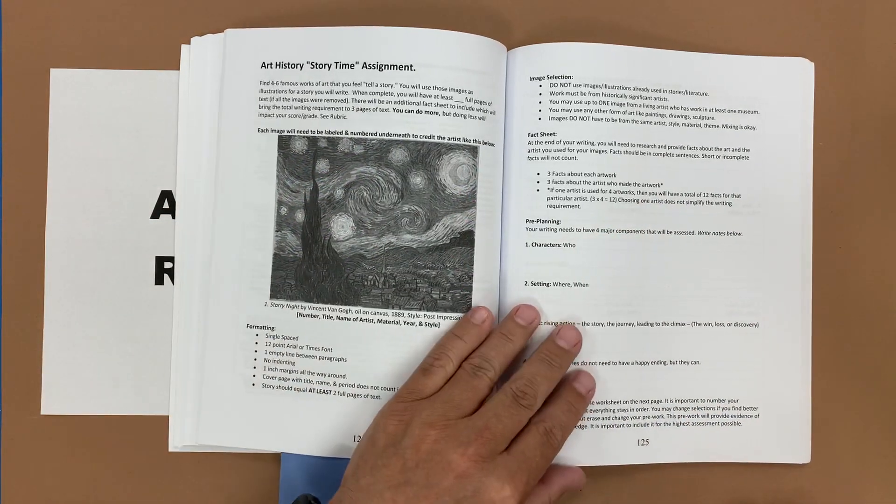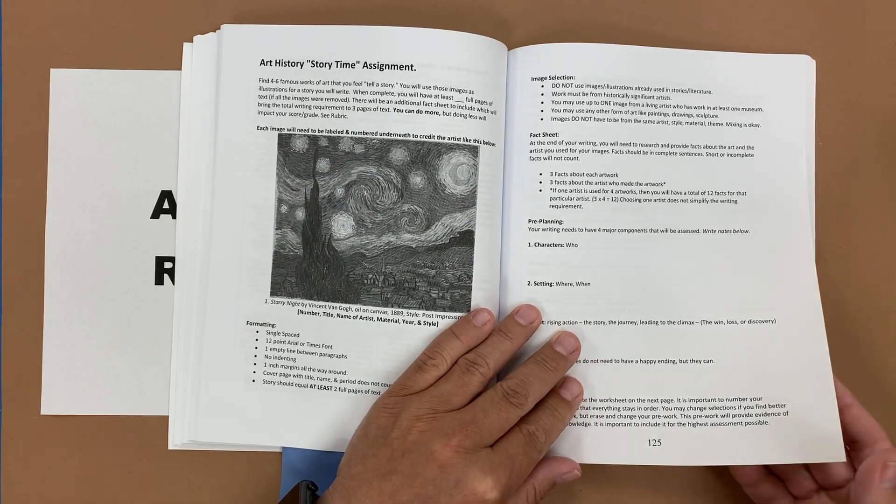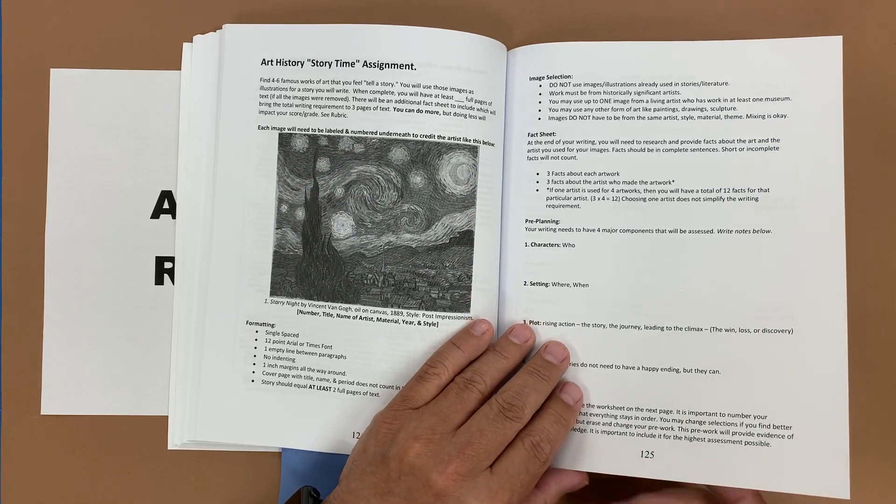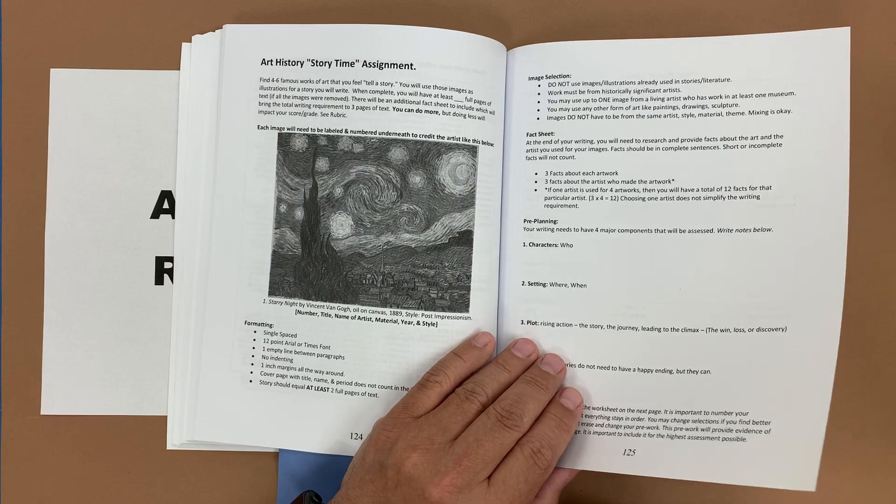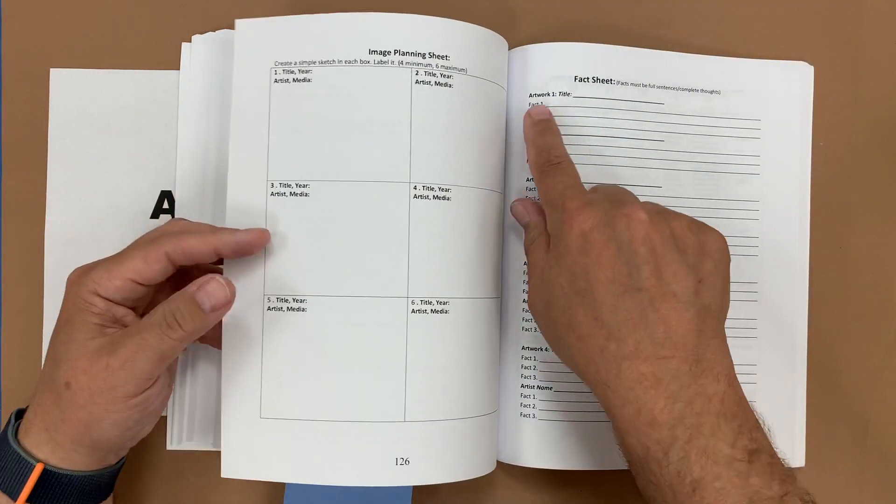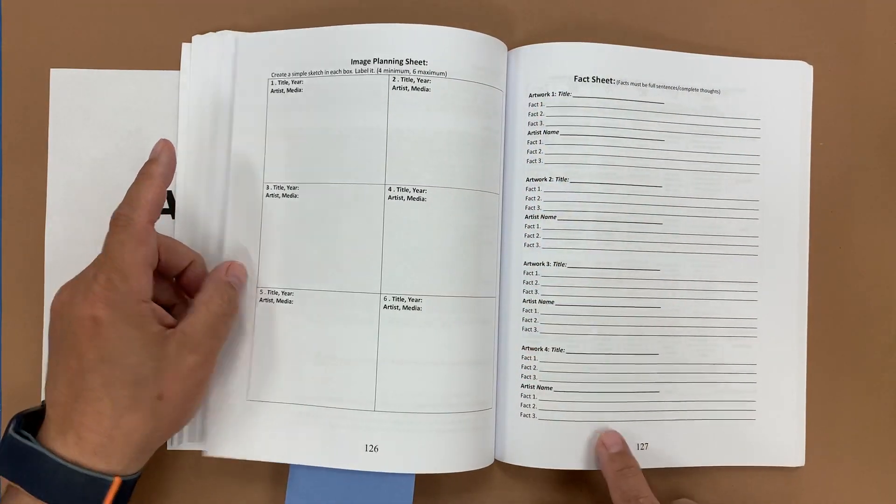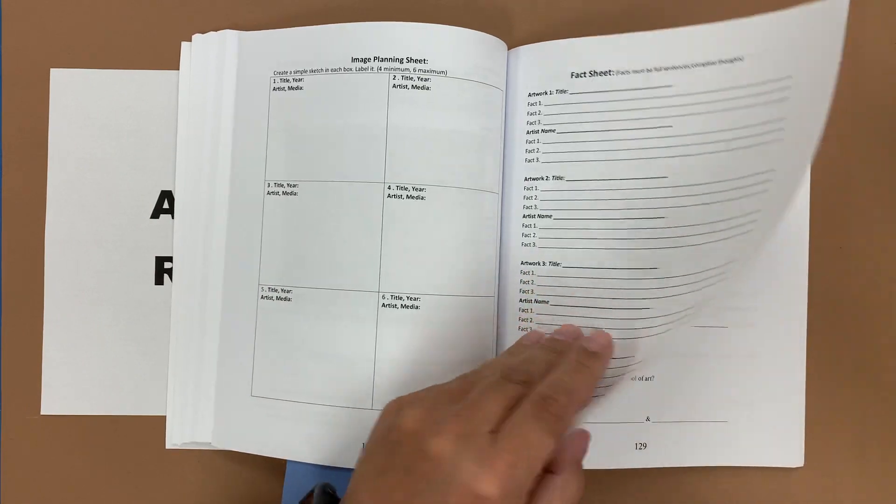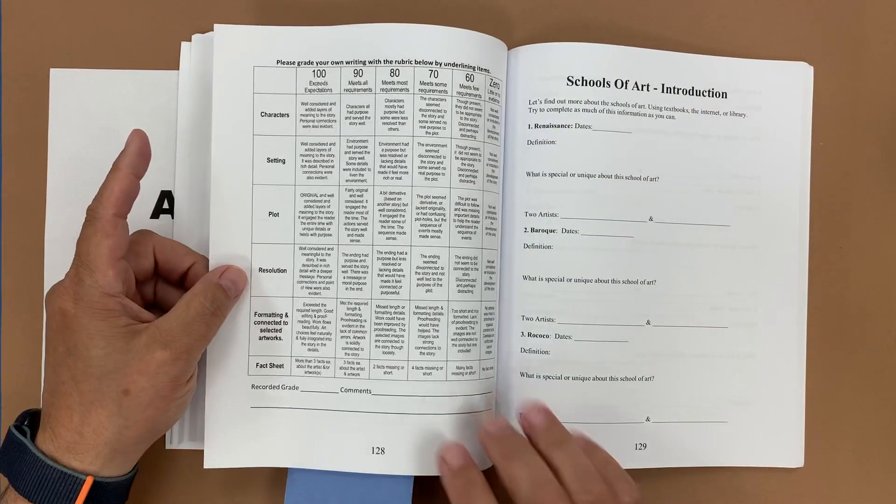And we have little worksheets to help them with developing characters, a setting, a plot, and a resolution. This is very helpful if you are trying to incorporate literacy into your program but then students do have to research about the artist and the artwork and incorporate that into their project. And then again we have a rubric for this.